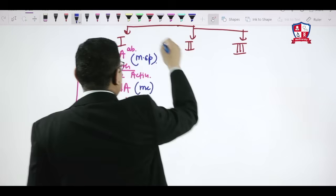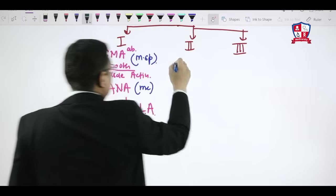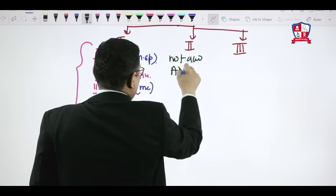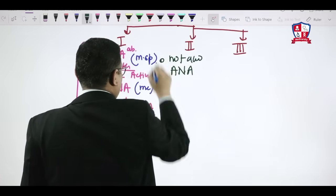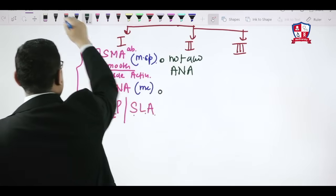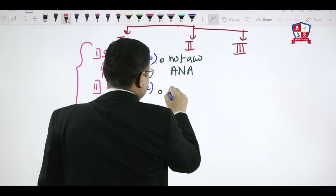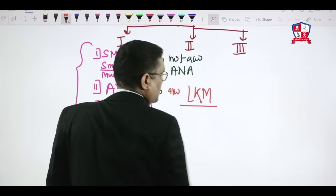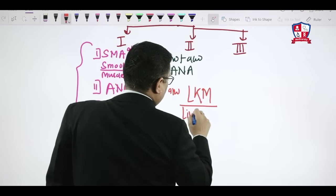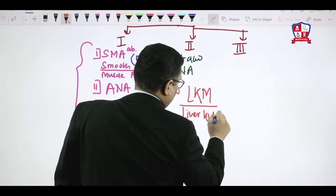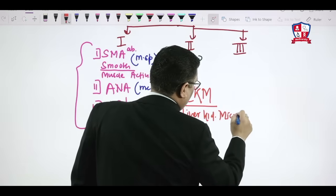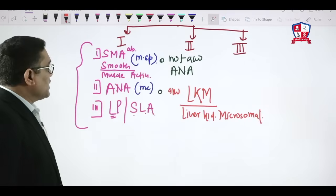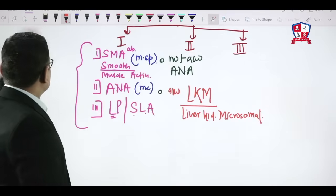Type 2 autoimmune hepatitis is not associated with anti-nuclear antibodies. Instead, it is characterized by liver kidney microsomal (LKM) antibodies.